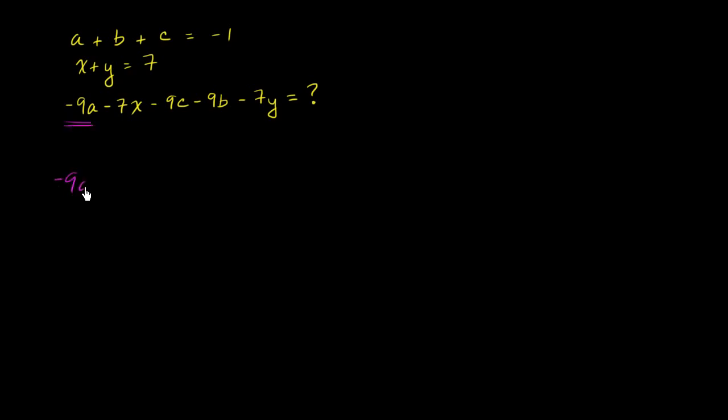So let's focus first on the a's, b's, and c's. We have negative 9a, negative 9b in alphabetical order, and then we have negative 9c. And I think you see what's emerging. Then let's work on the x's and the y's. We have negative 7x, minus 7x, and then we have a minus 7y. So minus 7y.